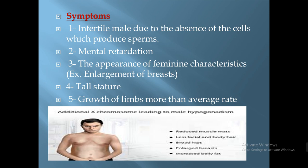The symptoms of Klinefelter syndrome include: the affected male will not reach puberty or develop the reproductive organs to produce sperms, so he will be infertile and unable to reproduce. Additionally, there is appearance of some feminine characters such as enlargement of the breast and tall stature.